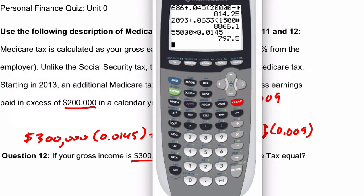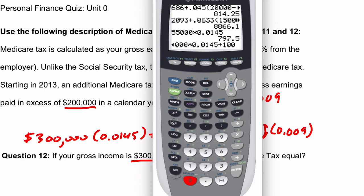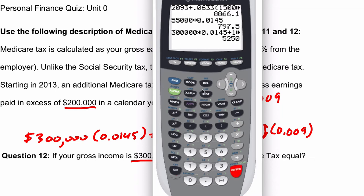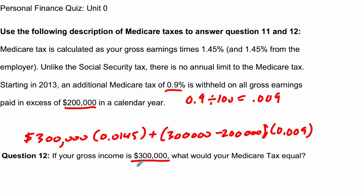So the correct calculation is: $300,000 times 0.0145, plus $100,000 — that's $300,000 minus $200,000 — times 0.009, which gives us $5,250. Sorry about that mistake. There are many ways to get at this, and it's easy to lose track of the numbers. Everyone is prone to mistakes in mathematics — that's how we learn. Thanks.